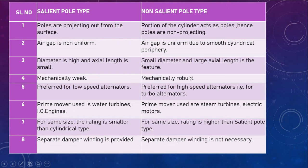Salient poles are mechanically weak while non-salient poles are mechanically robust. Non-salient pole type is preferred for lower speeds up to 1500 RPM due to heavy construction, while non-salient pole can be used up to 3000 RPM as it is lightweight. Prime movers for salient pole type are water turbines and IC engines; for non-salient pole, steam turbines, electric motors, and gas turbines are used. For the same size, the rating is smaller in salient pole type and higher in non-salient pole type.